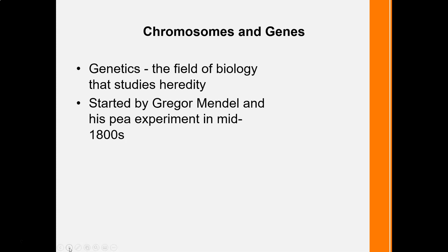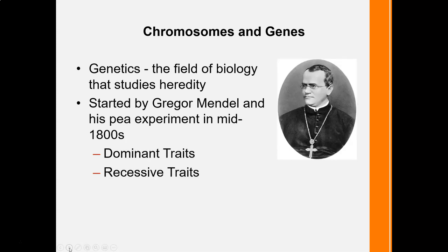Today we know what the real deal is, and we can thank that discovery to Gregor Mendel. Mendel started an experiment with pea plants where he crossbred two pea plants that were dichotomous in their nature, meaning they only had white, yellow, and green peas. He mixed them together and got offspring. From this pea plant experiment came the idea of dominant traits and recessive traits.